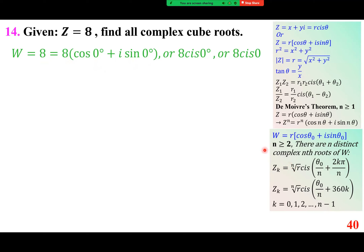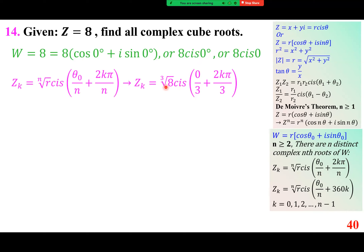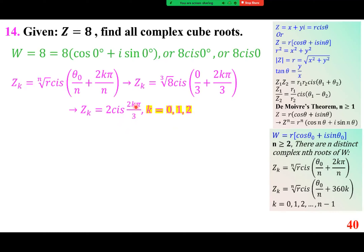The cube root of 8 is 2. Plugging in k equals 0: 2 cis 0. k equals 1: 2 cis 2 pi over 3. k equals 2: 2 cis 4 pi over 3. If you use k equals 3 it repeats. These give three distinct roots.